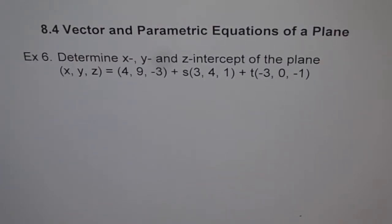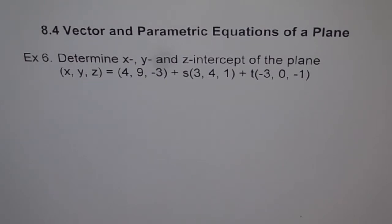Example 6. Determine the x, y, and z intercepts of the plane with vector equation (x, y, z) equals (4, 9, minus 3) plus S(3, 4, 1) plus T(minus 3, 0, minus 1).